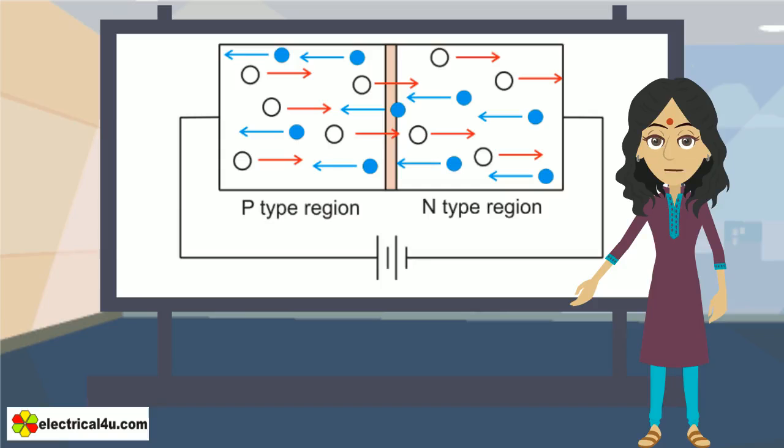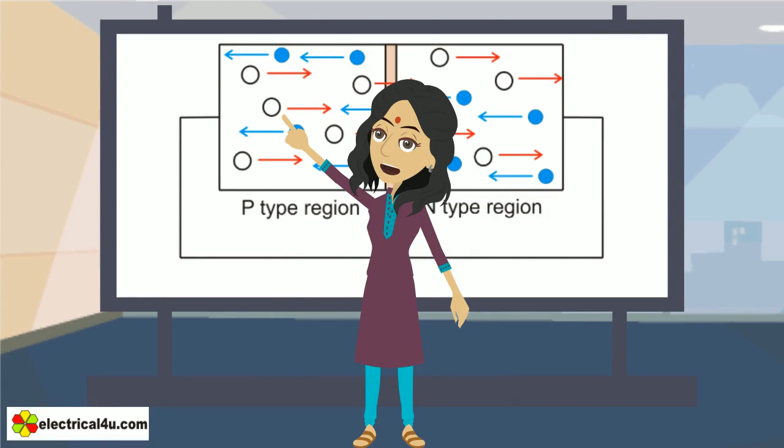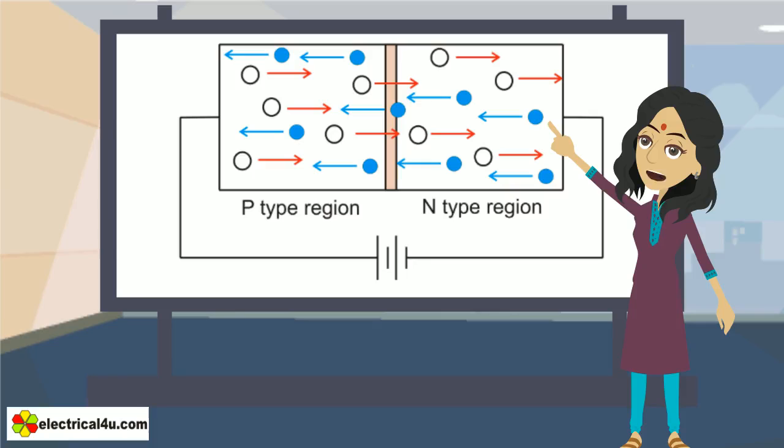Current is caused in the diode due to flow of holes and free electrons both. Holes are injected by positive terminals and migrated towards negative side. Electrons are injected by negative terminal and migrated towards positive side.